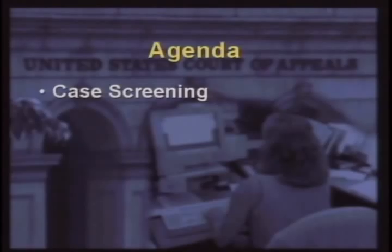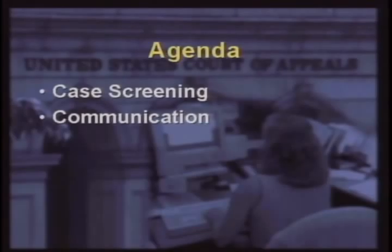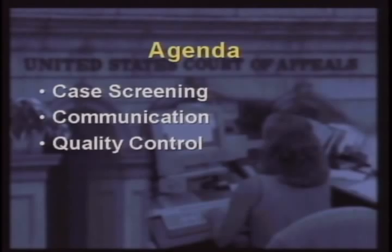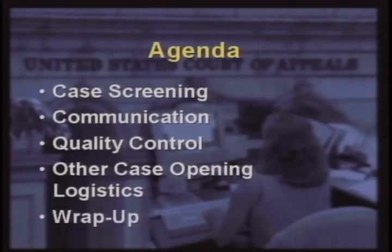In our first panel, we'll be talking about case screening-related challenges, including the role of case managers. Next, we'll cover the issue of communication — how we communicate with the district or bankruptcy courts, how you keep attorneys and court staff aware of changes in the FRAP rules, local rules, and IOPs, and where to go for additional information. Our third panel will focus on quality control. Finally, our last panel is a catch-all we're calling Other Case Opening Logistics, covering pro se appellants, second or successive applications, and so forth.